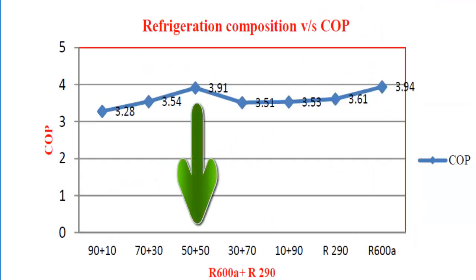Experimentally, it has been demonstrated that the optimal efficiency point for the mixture of R600A and R290 is when each gas contributes 50% by mass to the mixture.